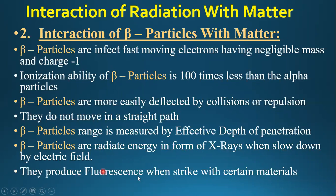Beta particles also produce fluorescence when they strike certain specific materials, such as phosphorus, zinc sulfide, and cadmium sulfide. When beta particles or electrons strike these materials, they produce fluorescence.